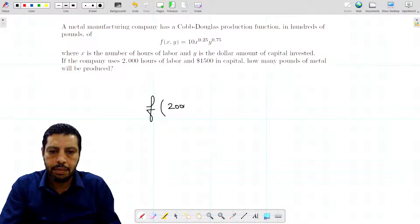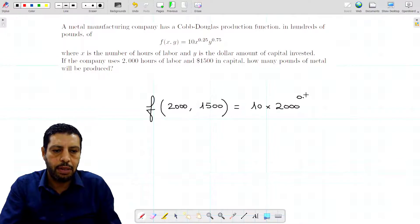2000, 4500. You're gonna get 10 times 2000 to the power of 0.25 times 4500 to the power of 0.75, and the result is